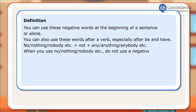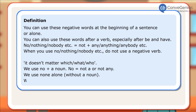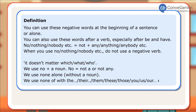We also use any, anything, anybody, etc. without 'not' to mean 'it does not matter which, what, or who.' We use no plus a noun — no is equal to 'not a' or 'not any.' We use none alone, without a noun. We use 'none of' with the, their, them, these, those, you, us, etc.